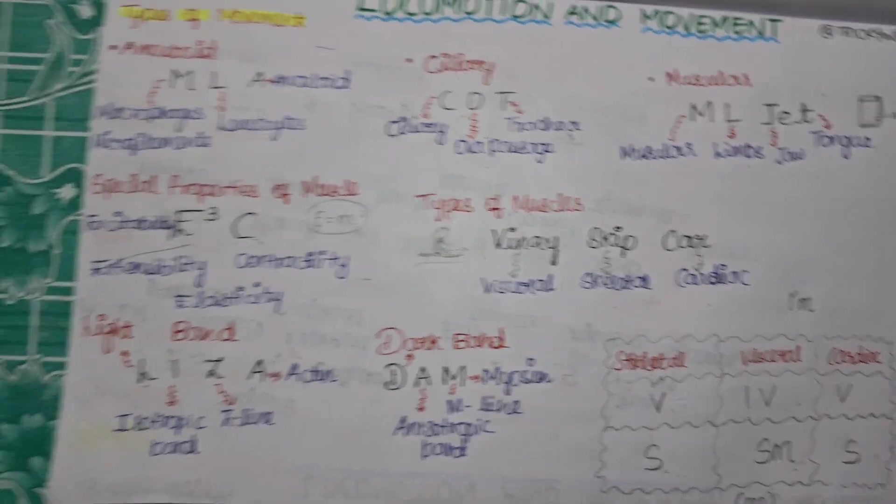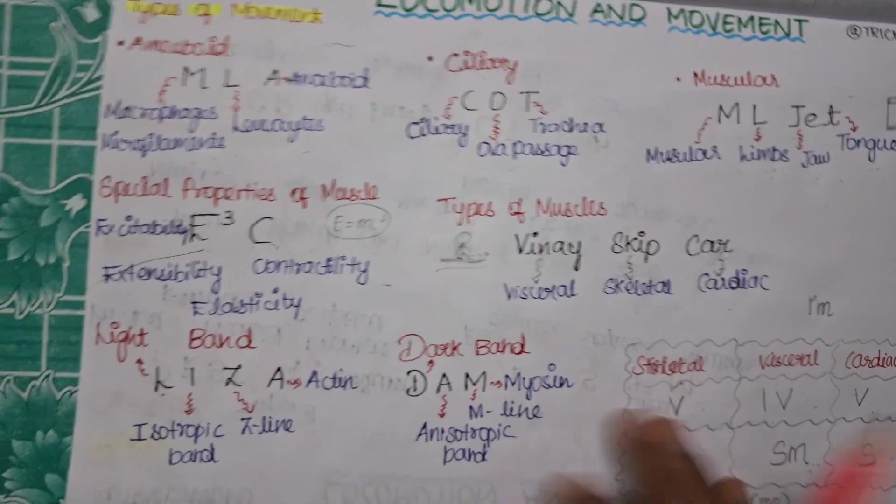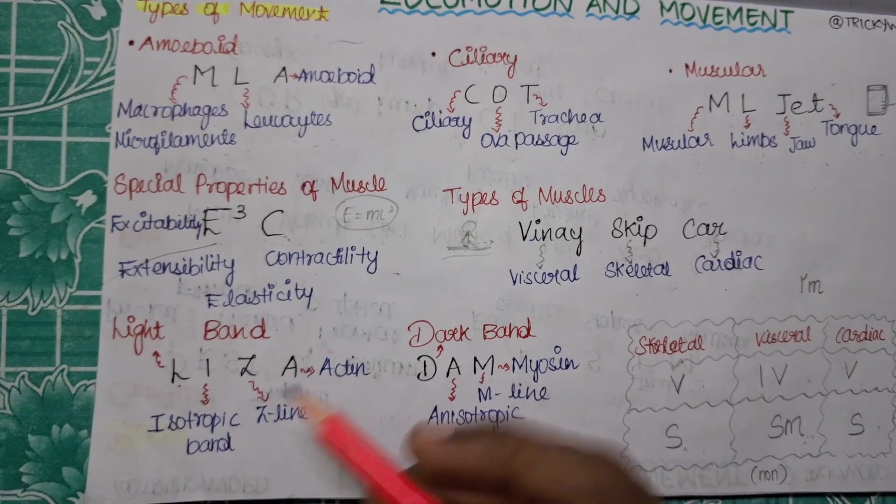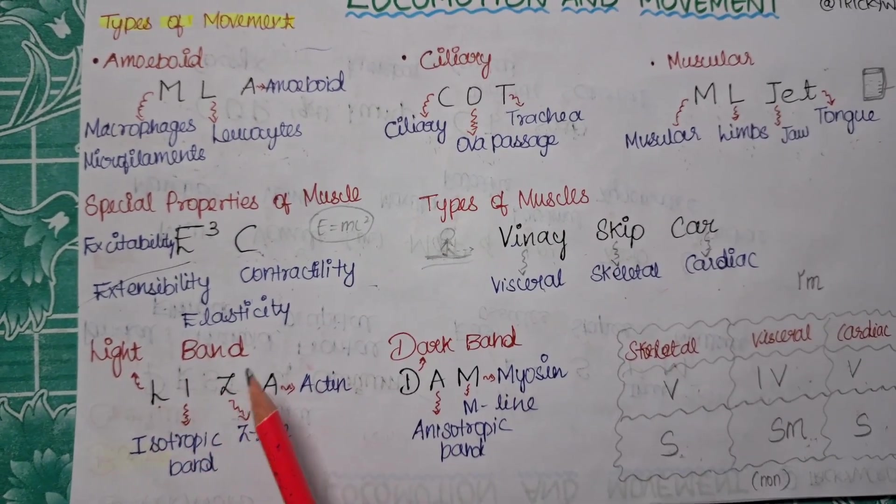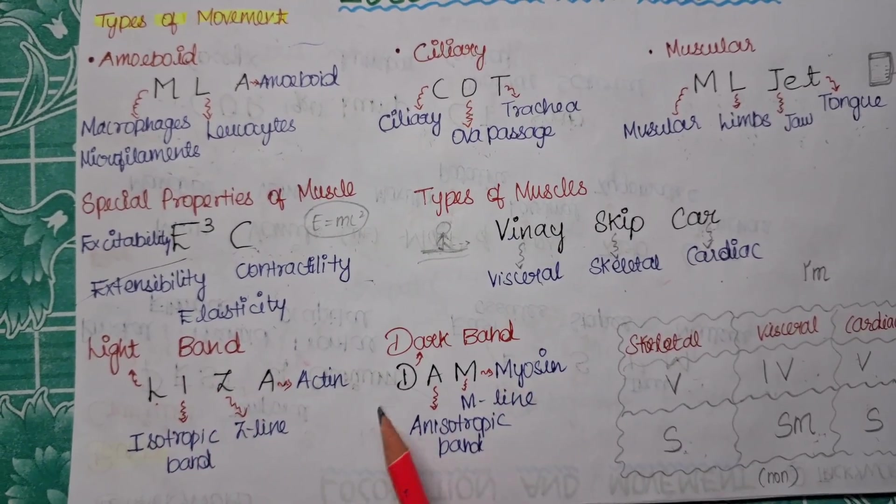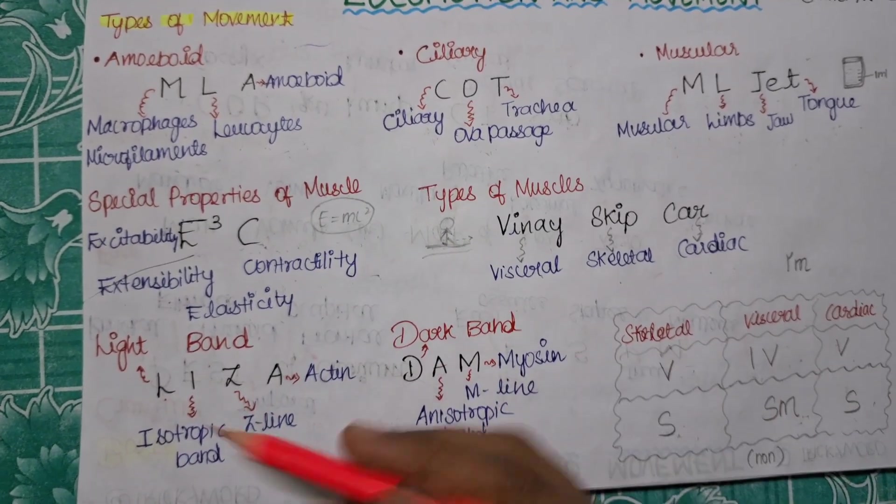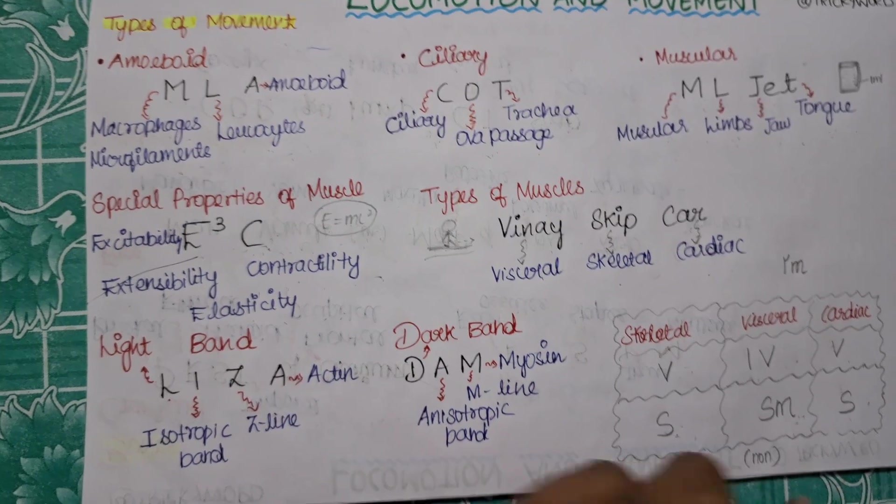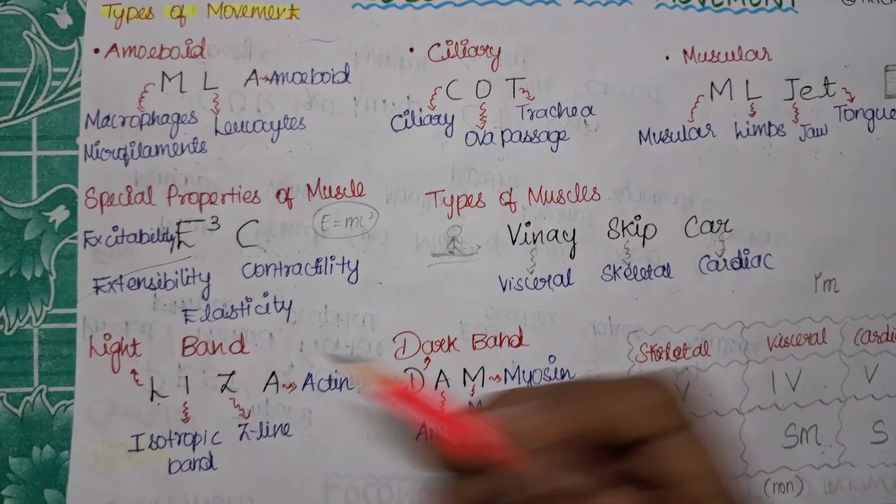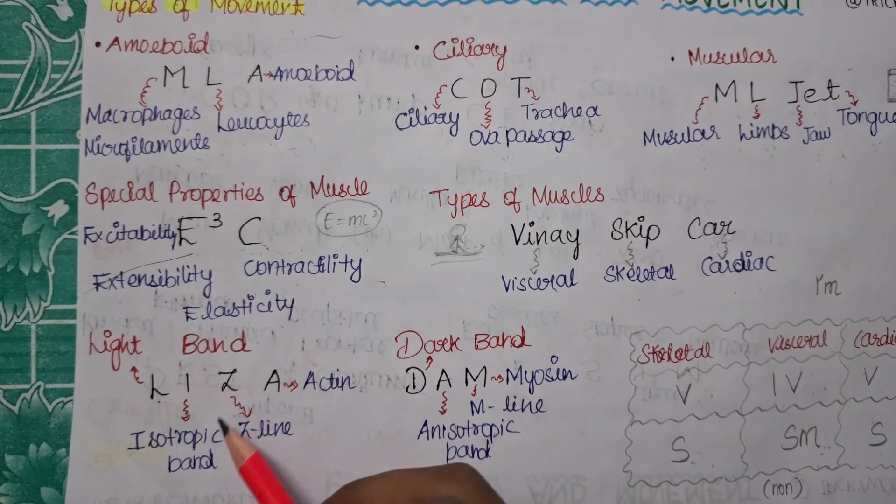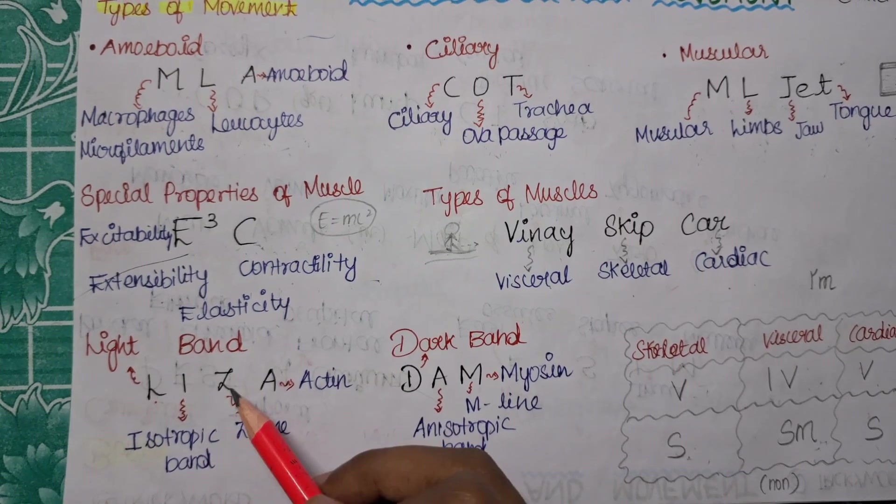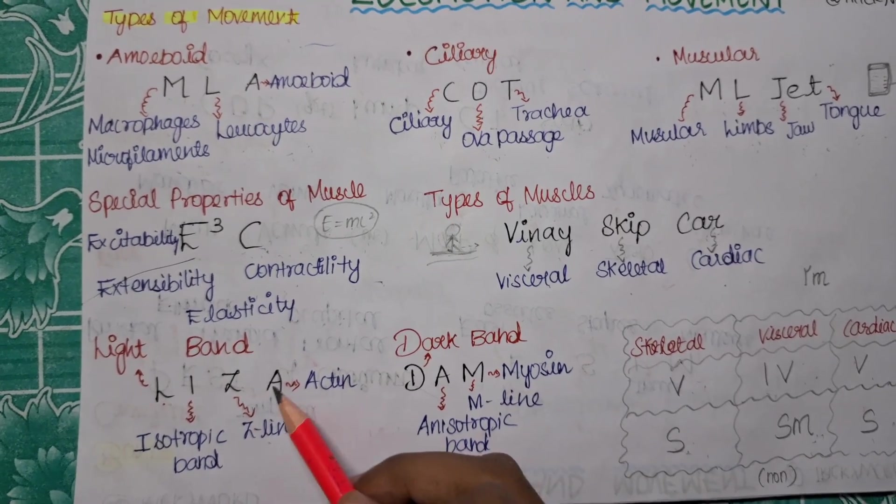Let's move on to the next one. Now the tricks will be for your light band and dark band. Light band is given by the name Lisa, a girl. She is light and active. Lisa: L is for light, I is for isotropic band, Z is for Z line, and A is for actin.